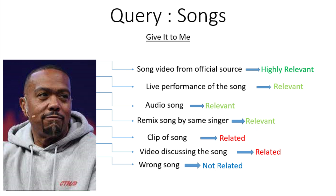Now let's understand song queries. If you face queries related to songs — for example, Give It To Me by Timbaland — if the song is from an official source, you will choose highly relevant. If the same song is from an unofficial source, you will choose relevant. If the result video is a live performance of the song, it will be marked as relevant. Similarly, an audio song with a static image is also relevant. Or if the song is a remix sung by the same singer, you will also choose the relevant option.